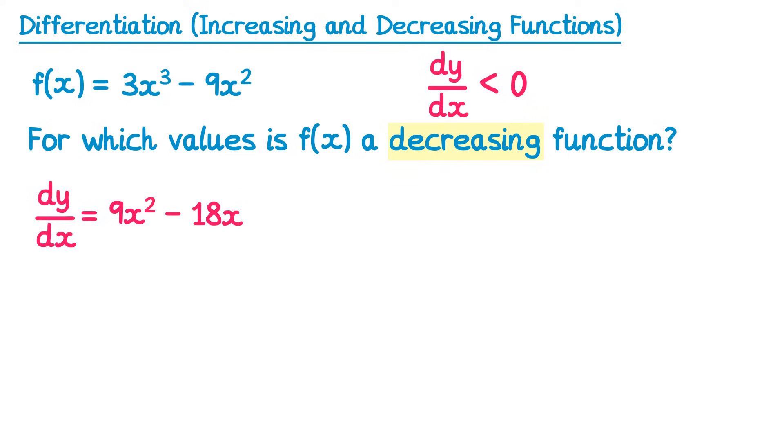This time we need to find the x values for which it is decreasing. So we want the gradient function to be less than 0, so 9x squared minus 18x is less than 0. We end up with a quadratic inequality that we need to solve. We can factorize the left-hand side: 9x times (x - 2), which is less than 0.